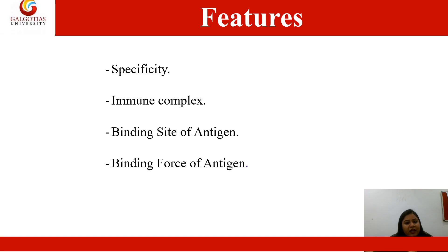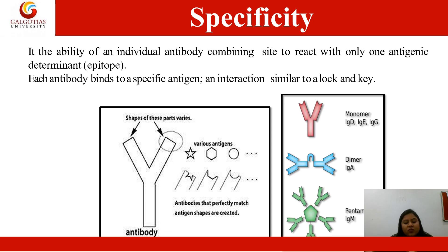What are the salient features? First, there must be specificity, and they will form an immune complex. There is a binding site on the antigen and a binding force is present. Specificity refers to the ability of an individual antibody combining site to react with only one antigenic determinant or epitope — that is, it will bind to a specific antigen-determinant site.